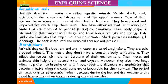Amphibians. Animals that can live both on land and in water are called amphibians. They are cold-blooded animals, which means they do not have a constant body temperature — they adjust themselves to the temperature of their environment. Their moist and permeable skin helps them absorb water and oxygen. However, they also have lungs which help them to breathe on land.